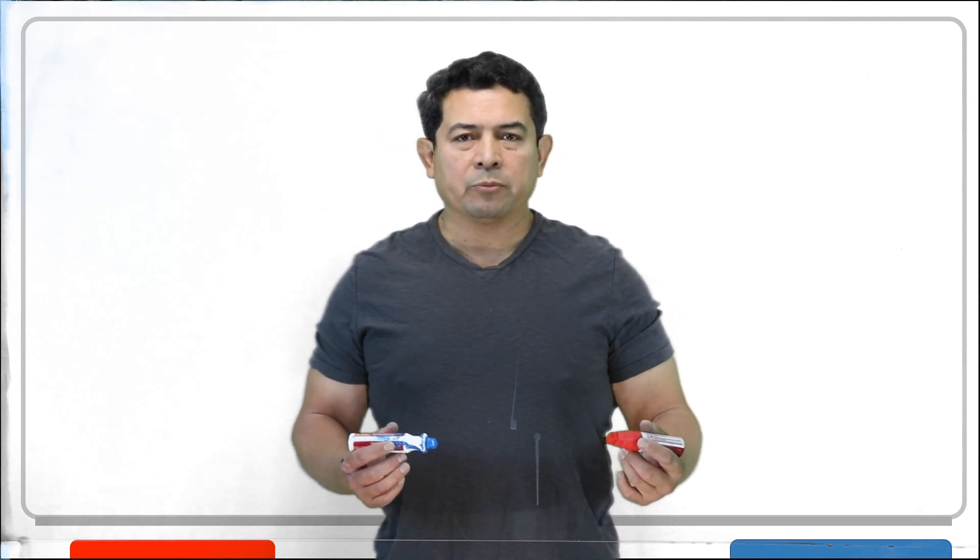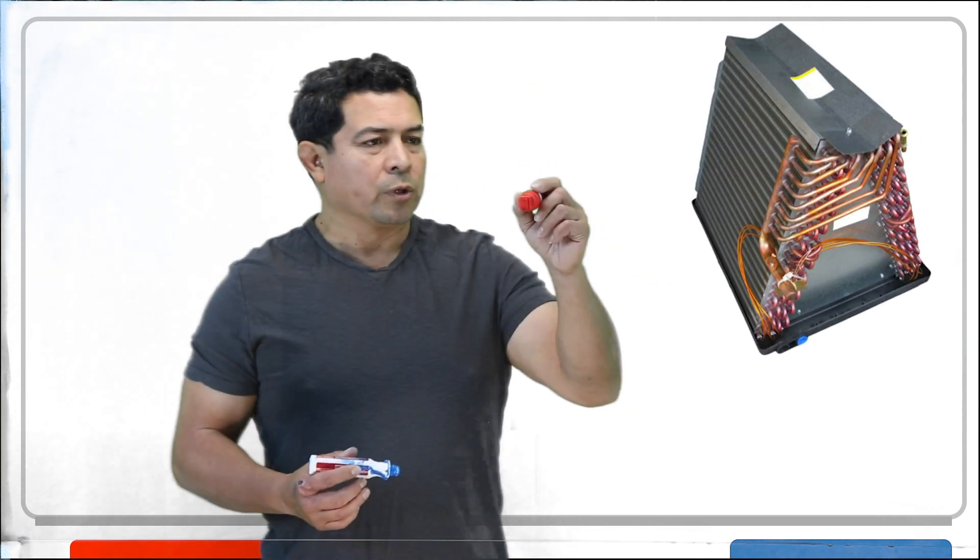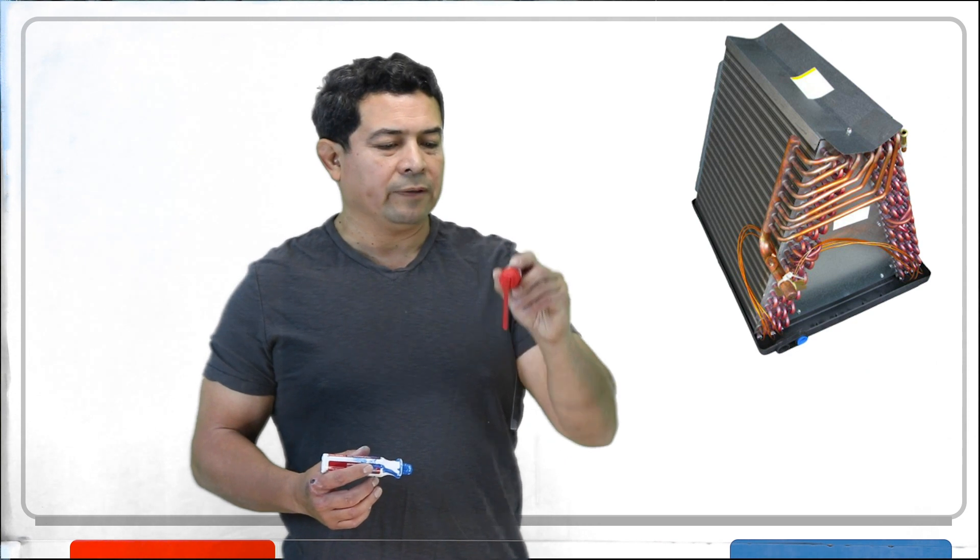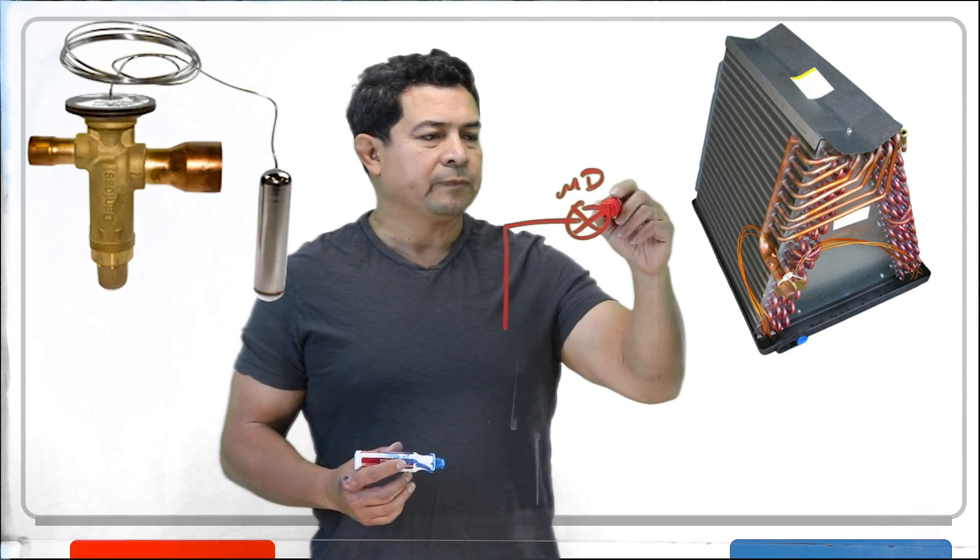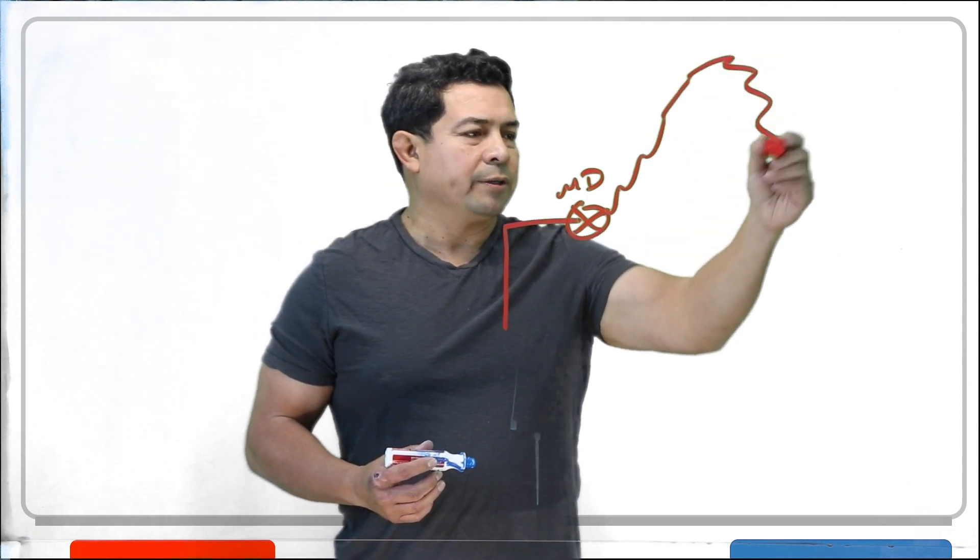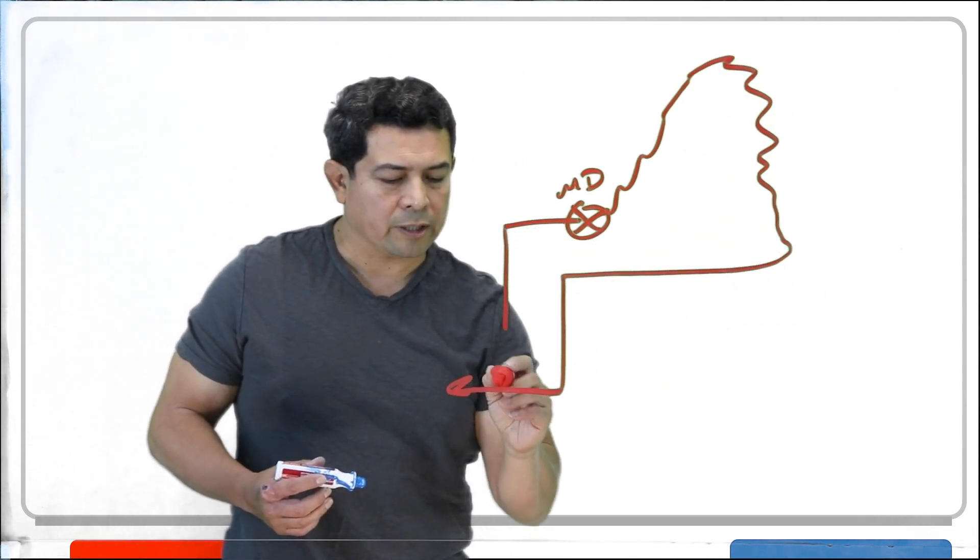Now what part of the refrigeration system absorbs the heat? That's going to be the evaporator. So we're going to have the evaporator, we're going to have liquid line coming up like this, going to my metering device, goes into my evaporator, and then it comes back out through my suction line.